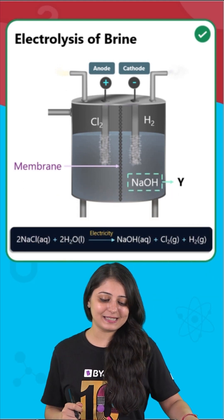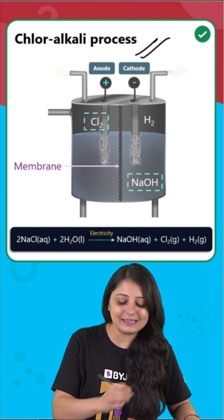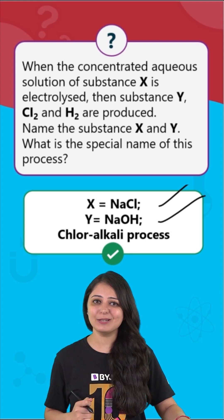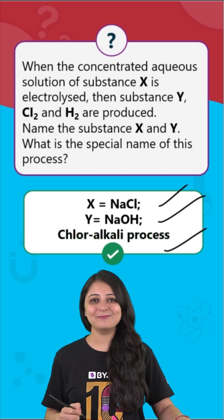And the name of this process is chloralkali process. So X is sodium chloride, Y is sodium hydroxide, and the special process is chloralkali process.